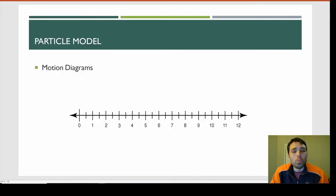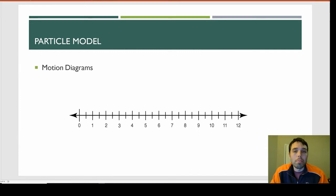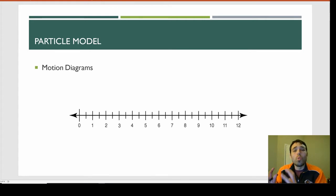Motion diagrams are simple and effective tools that allow us to analyze the motion of an object through space in one dimension. Before we get to the motion diagram, let me say a quick word about the particle model in physics. The particle model allows physicists to represent larger objects like airplanes, cars, and planets as simple dots or particles on your screen or paper. We can do this because despite the fact that these objects might have a lot of moving parts, the whole object itself moves as one continuous unit.